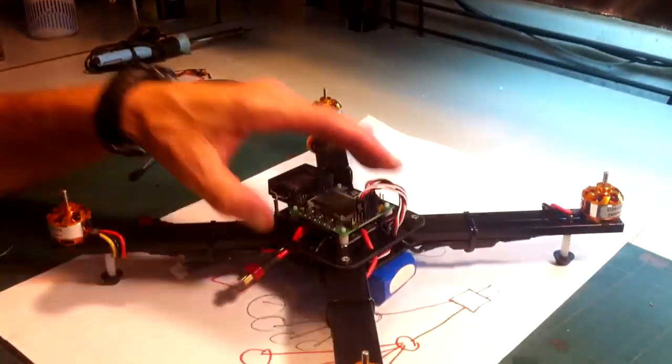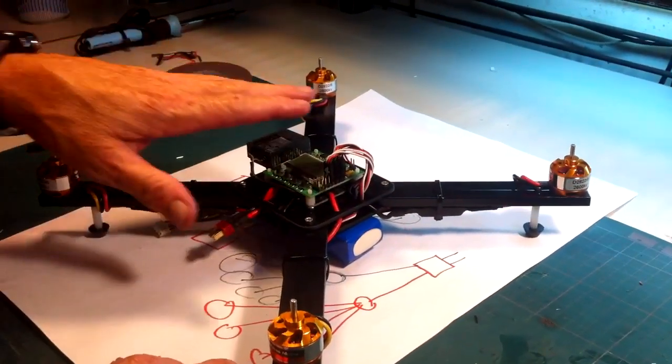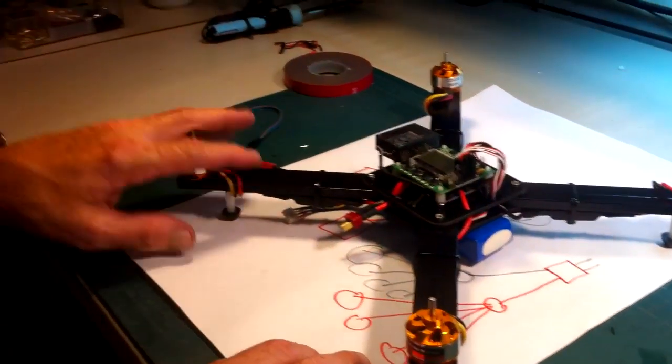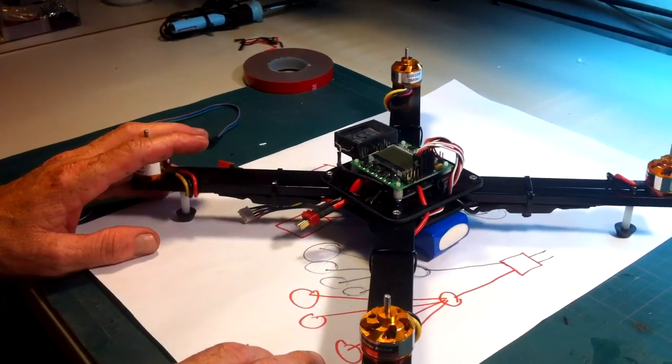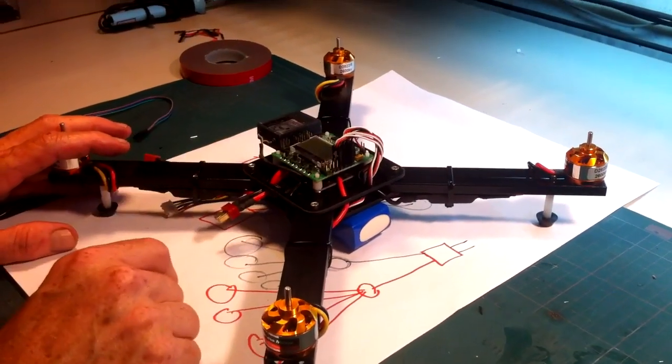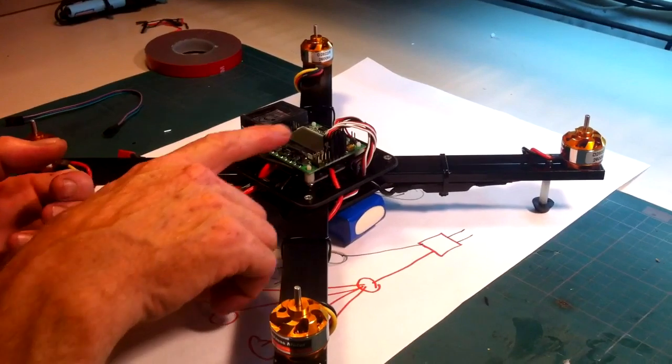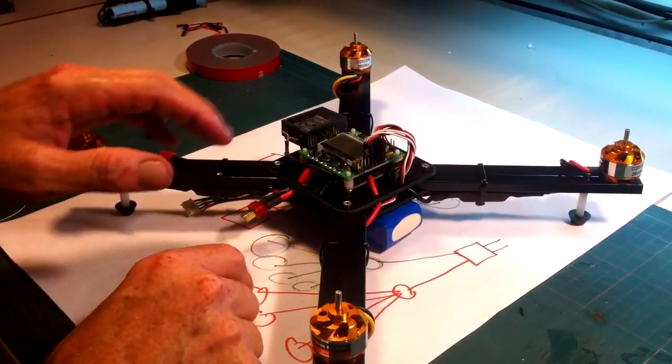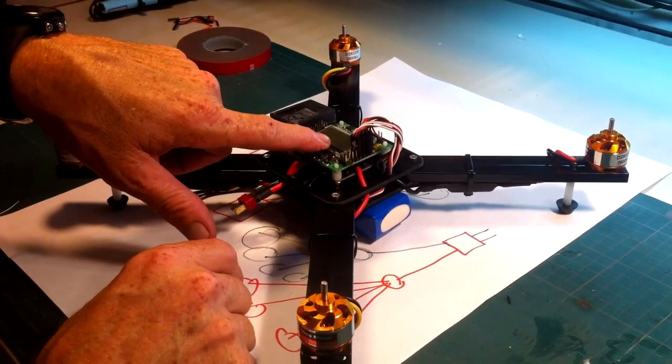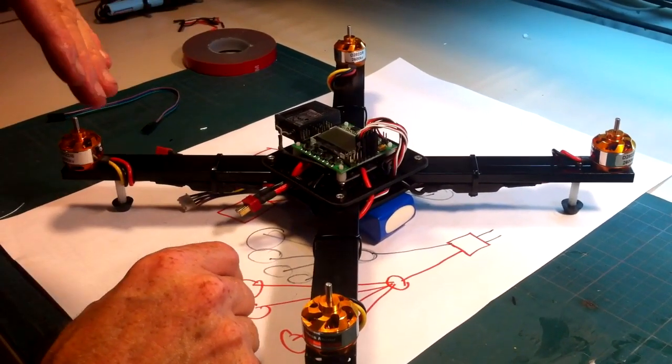Then I showed you that this is in the X copter configuration with motors numbered one, two, three, and four. Once you've got that connected and the KK2 powered up, you can choose in the LCD configuration.